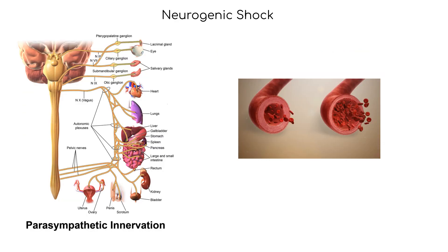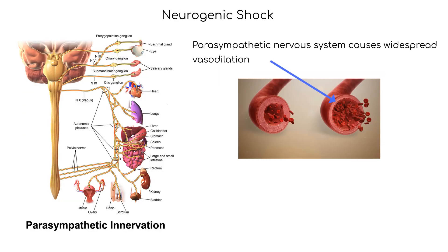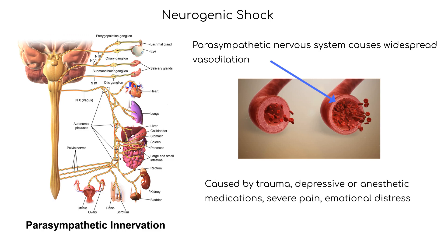Neurogenic shock results from the parasympathetic nervous system causing widespread vasodilation. The sympathetic nervous system is inhibited as well. Neurogenic shock occurs from nervous system trauma, depressive or anesthetic medications, and severe pain or emotional distress. The overactivation of the parasympathetic nervous system can also cause a slowing of the heart rate known as bradycardia.